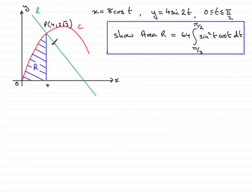Now this part of the question, what we've got to do is find this area R bounded by the line x equals 4, the x-axis and the curve C, which is given by the parametric equation up here. We've actually got to show that the area R is equal to 64 times the integral from π/3 to π/2 of sin²t cos t dt. So how are we going to do that?